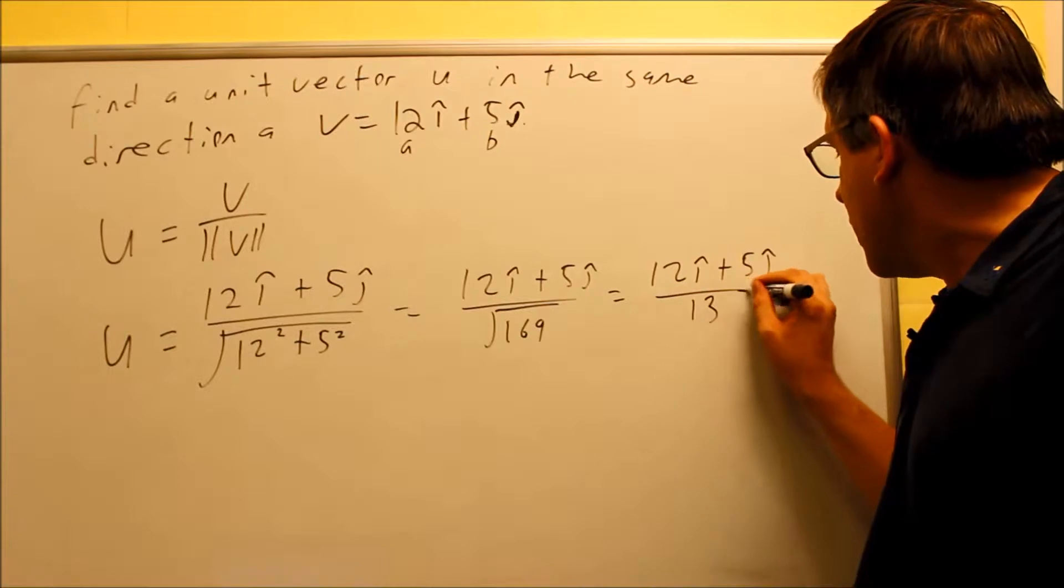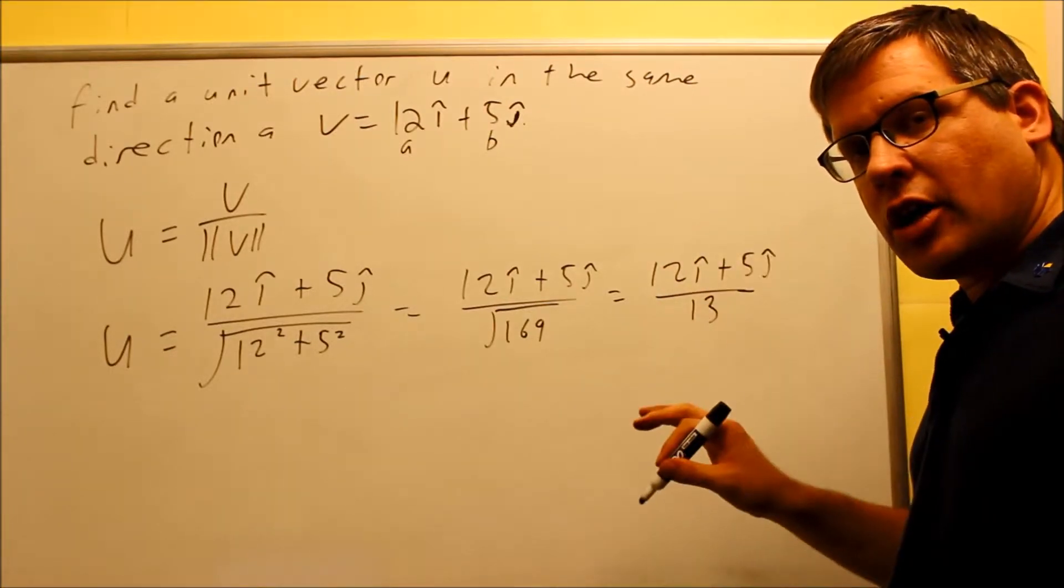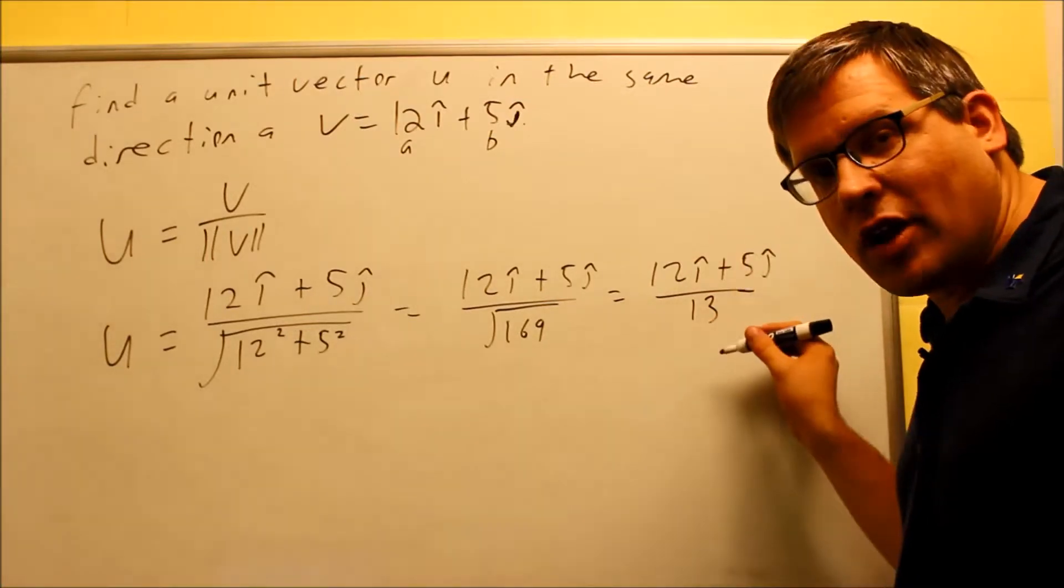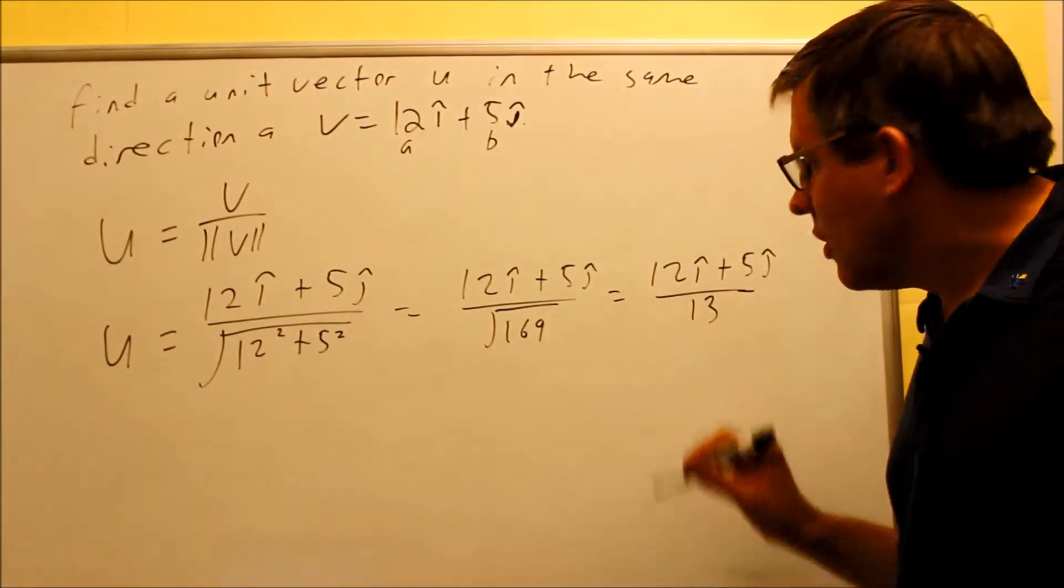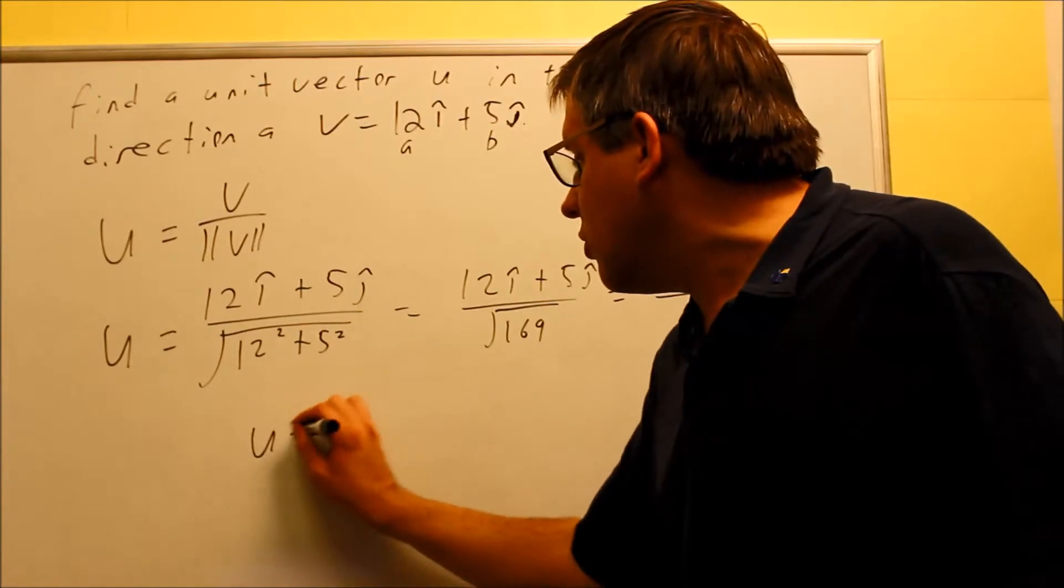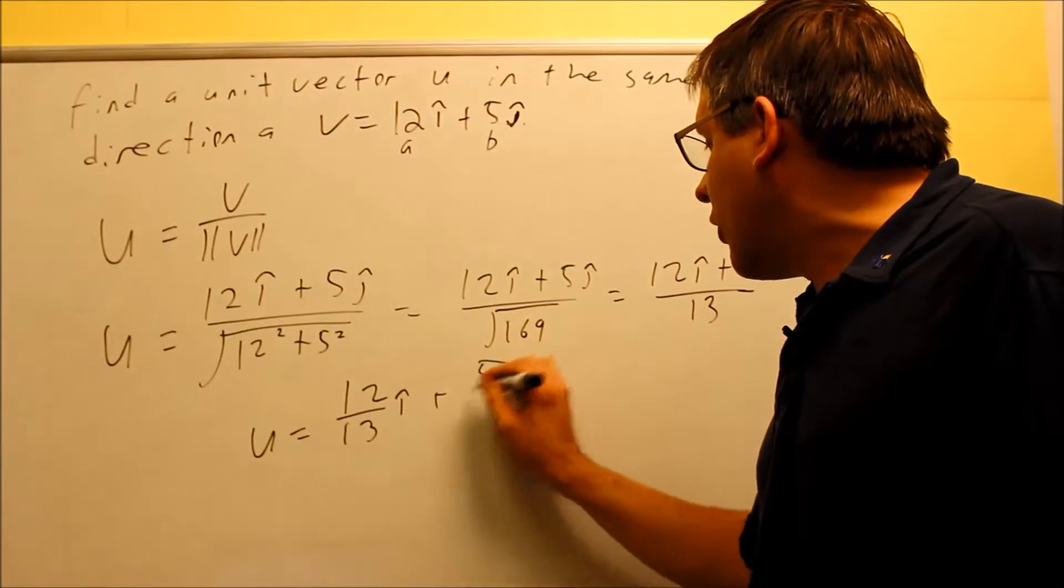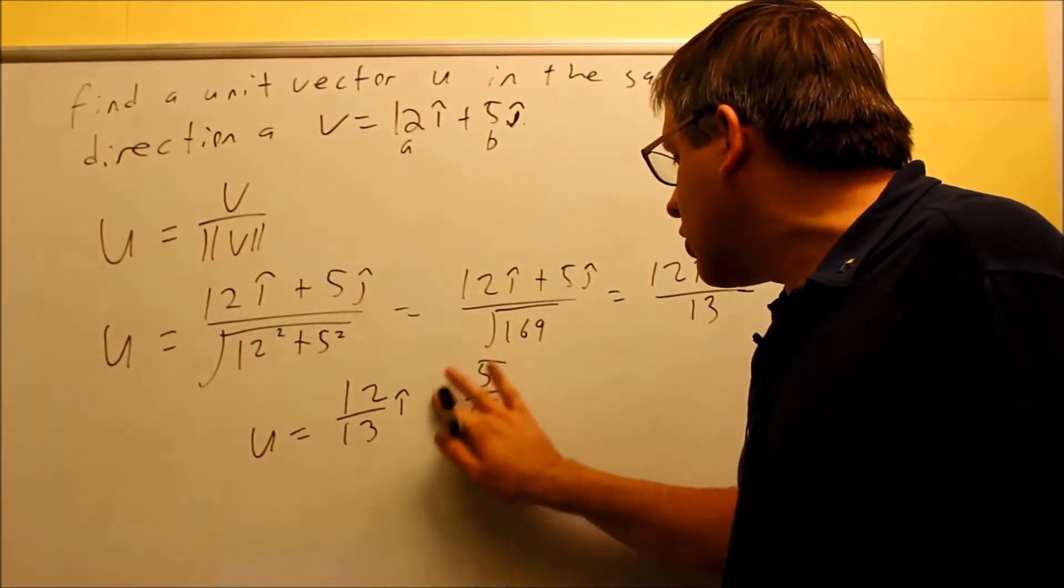Now you don't want to leave your answer like this. You want to go ahead and break it up into the I and J components separately. That's the proper way of writing a vector as two different components. So now I'm going to say that my U is equal to 12 over 13. That's the I component. And 5 over 13. That's the J component.